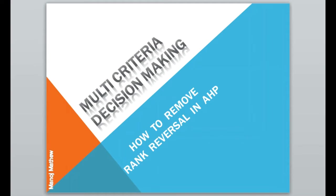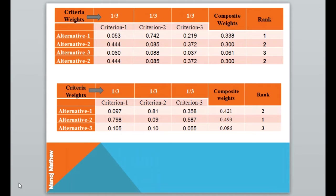Hello all. In this video I am going to explain how to remove rank reversal in AHP. In the last video I explained how, with the addition of the same alternative in the decision matrix, the rank changed. I would like you to watch that video before watching this one — the link is given in the description below.